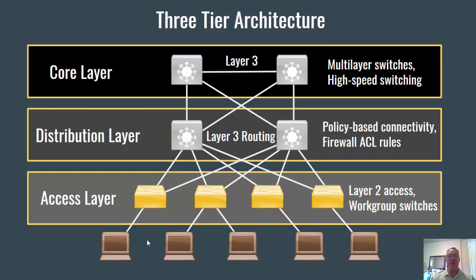At the access layer is where our end devices connect to the network — PCs, printers, phones, you name it. This is the access layer where we access the network. You also have access layer switches, which we call workgroup switches, at the access layer. Our workgroup switches and end devices connect into the access layer.